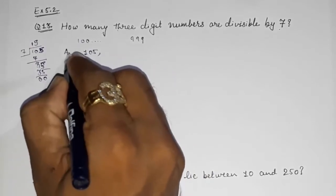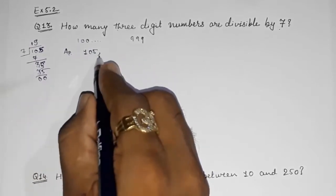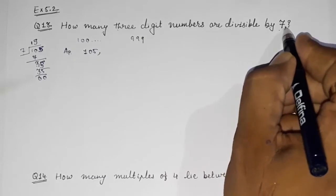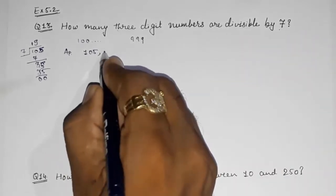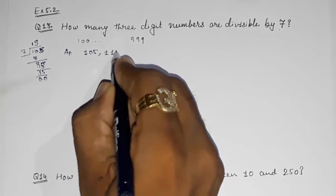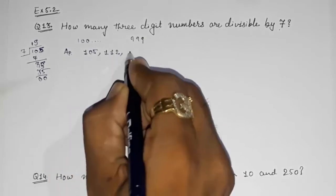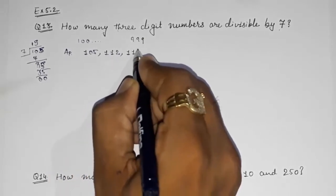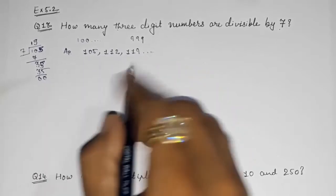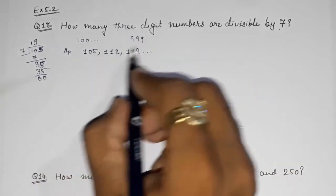That will be our AP's first term. Now what will be the second term? Just we have to add 7 in it. So that will be our second term, that is 112. Then again add 7, 119. So this way we can continue, but we need to find out the last term also.